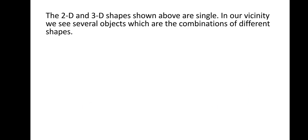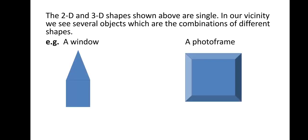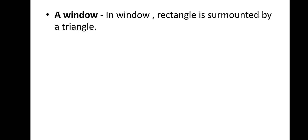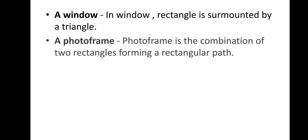The 2D and 3D shapes shown above are single. But in our vicinity, we see several objects which are combinations of different shapes. For example, a window and a photo frame. In the window, a rectangle is surmounted by a triangle. In a photo frame, it is the combination of two rectangles forming a rectangular path — these are combinations of 2D and 3D shapes.